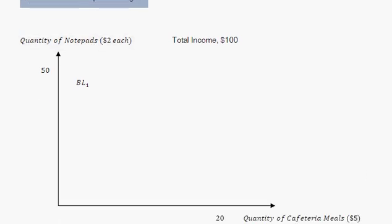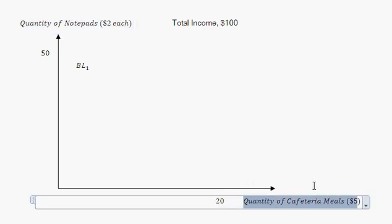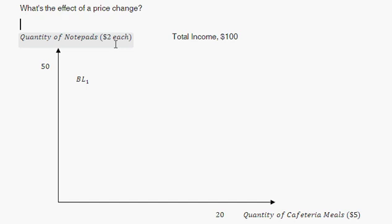In this two-good economy that we deal with in intro to econ, when we have a price change, you're going to see that you change your consumption mix of those two goods. But the result of that price change is actually the result of two effects: the substitution effect and the income effect. So I'm going to walk through an example where we change prices and see both effects.